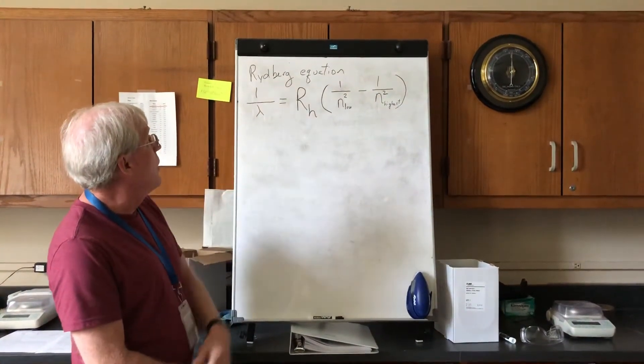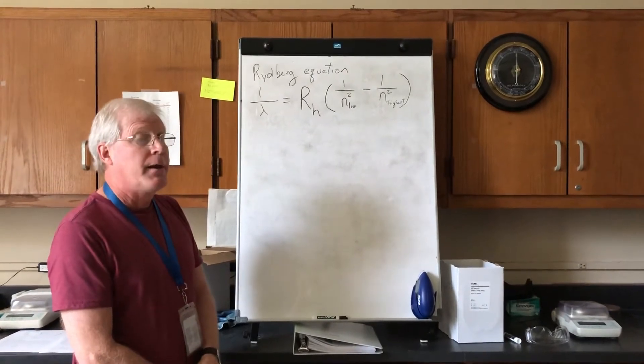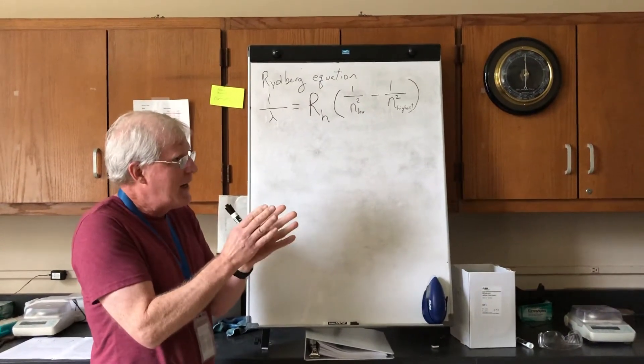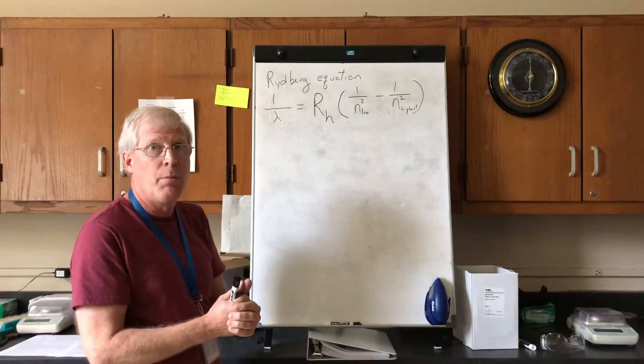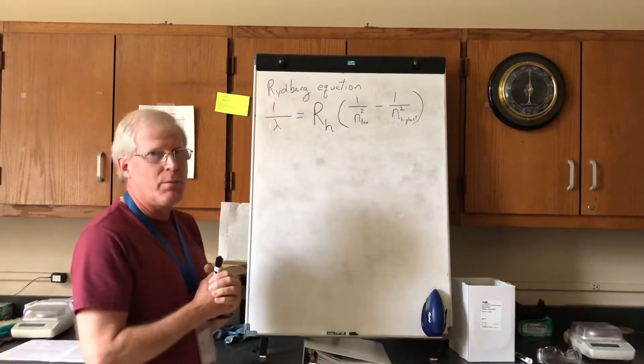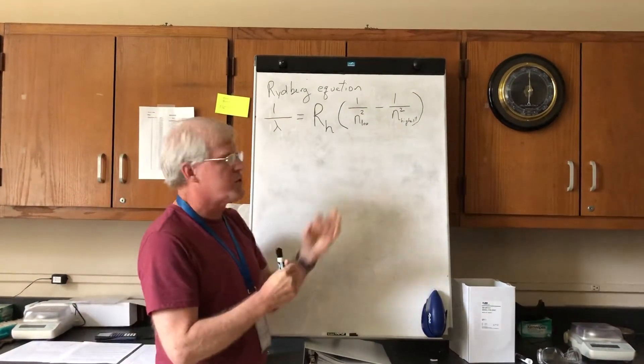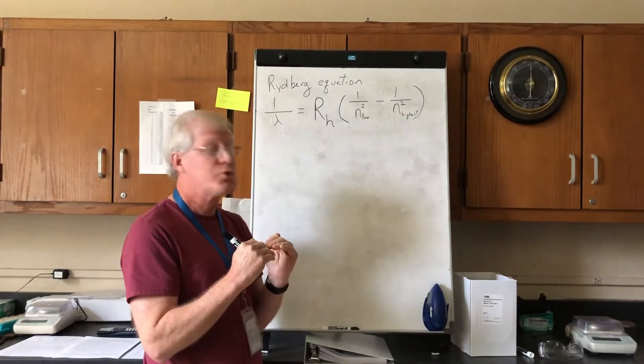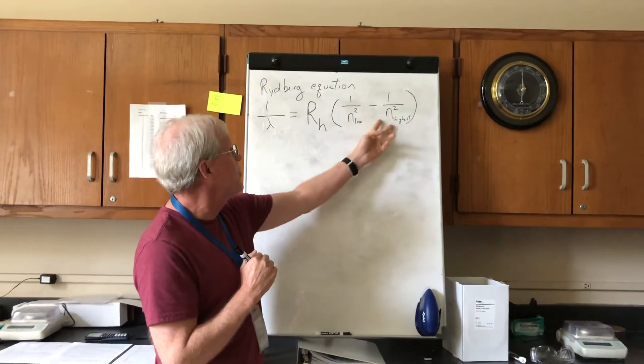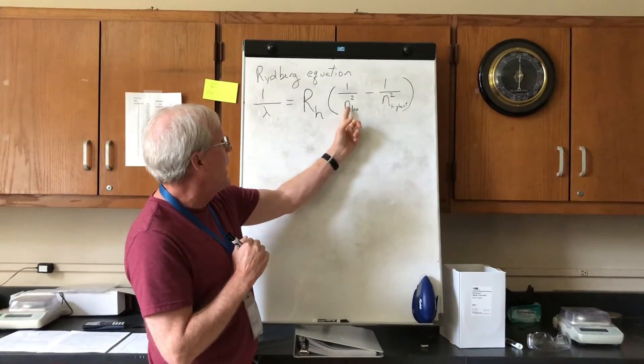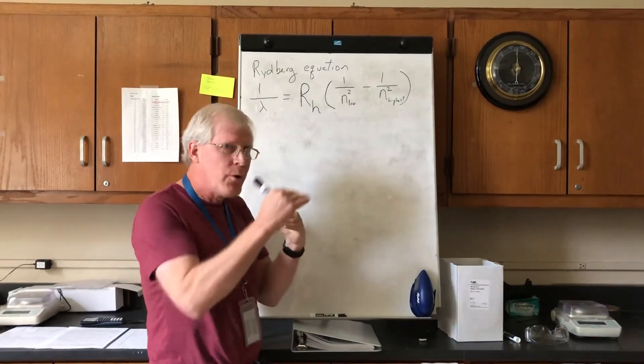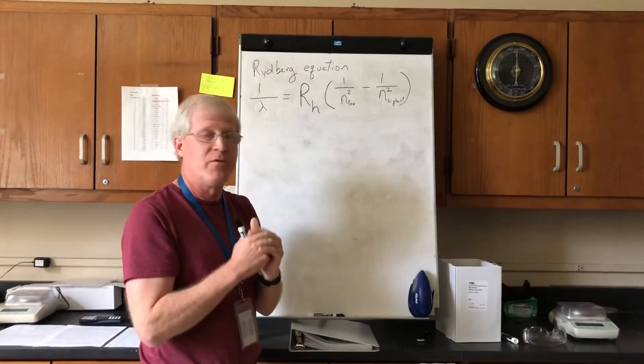What I have up on the board is called the Rydberg equation. You've seen the hydrogen lamp, but if you take that light and separate it into the individual color components, you'll see what we call line spectra. What Rydberg was able to figure out is that these electrons are jumping from one energy level to another energy level. In this Rydberg equation, he's got these two parameters. I've got them labeled n_low and n_highest, so this represents the two energy levels that an electron is jumping from one level to another.